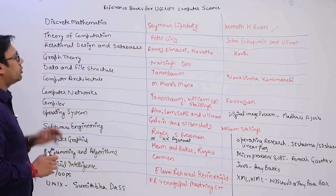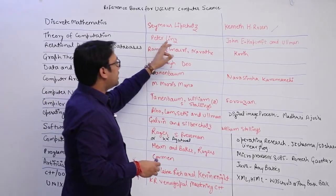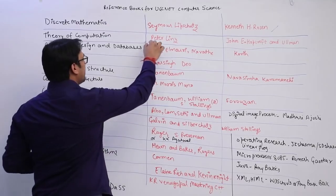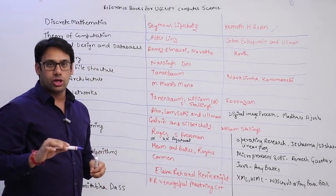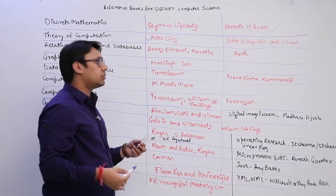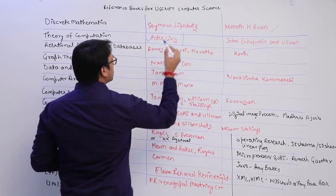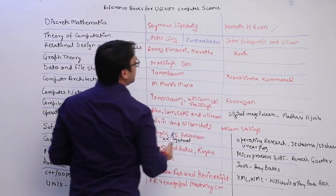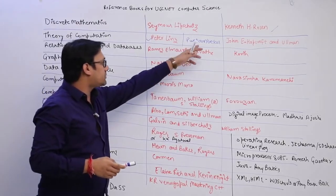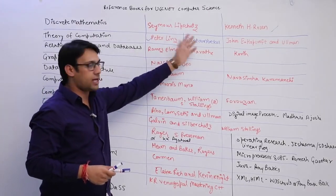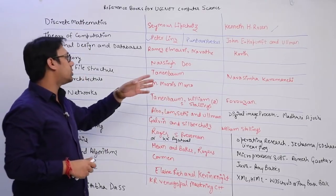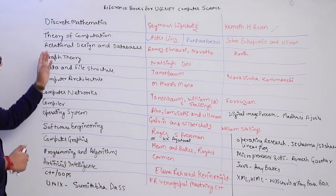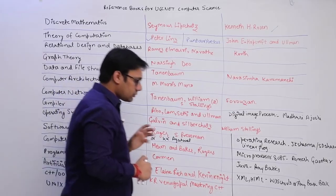For Theory of Computation, we have two books: one is Peter Linz and the second is Ullman. Personally I feel Peter Linz is the better book. If you want a local author book, I found that there is a book by an author named Puntam Baker — you can check the spelling — which is also available on Amazon and is very easy to understand. It is a good local author book for easy understanding of the concepts.